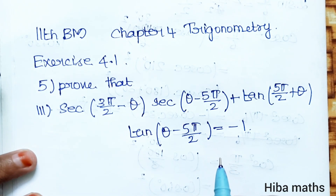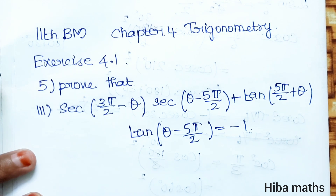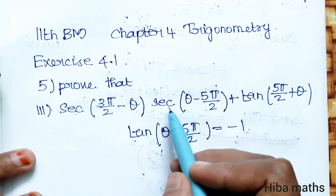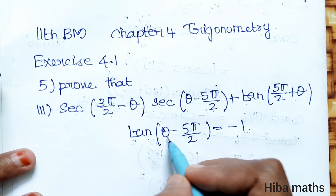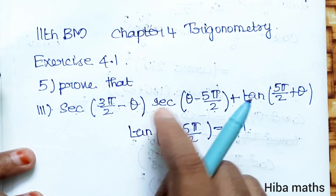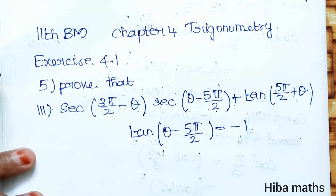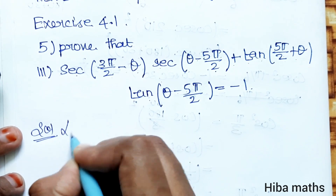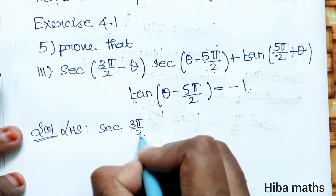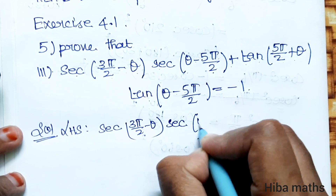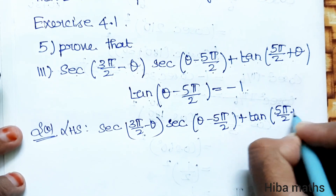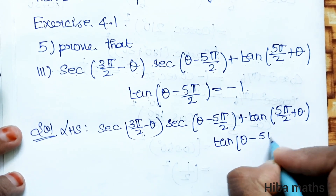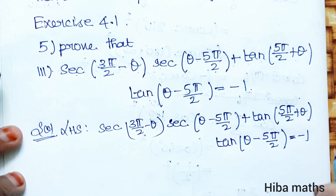Hello students, welcome to Hiba Max XI Standard Business Math, Chapter 4 Trigonometry, Section 4.1, 5th question. We need to prove that sec(3π/2 - θ) · sec(θ - 5π/2) + tan(5π/2 + θ) · tan(θ - 5π/2) is equal to minus 1.